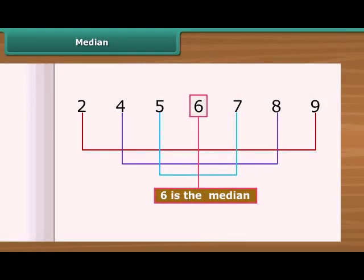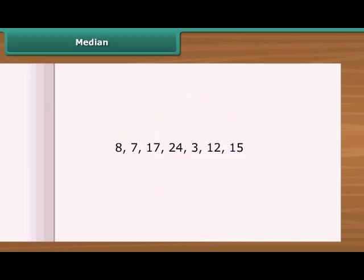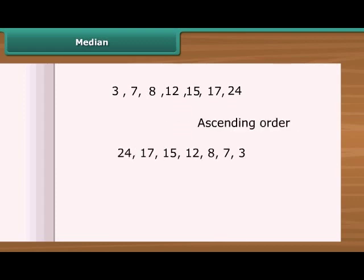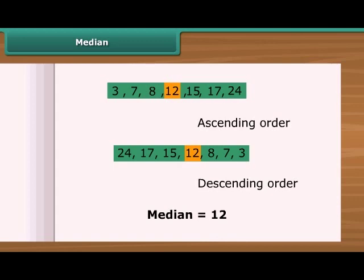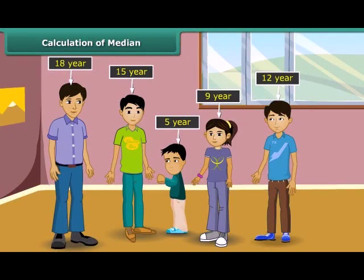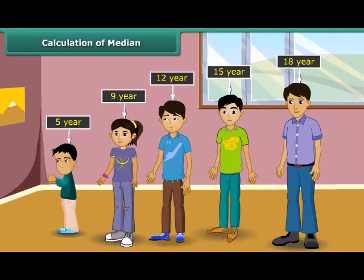Median is the value which lies in the middle of a group of numbers that have been arranged in order by size. Let us find the median of these numbers. Firstly, we need to put these numbers either in ascending or descending order. You can see the middle number is 12 — it has 3 numbers to its right and 3 numbers to its left. So the median is 12. The Goyangar family has 5 children, aged 9, 12, 5, 18 and 15. What is the age of the middle child? First, we order the children's ages from least to greatest. The age of the middle child is the middlemost number in the data set, which is 12. Likewise, you can find out the median of various data.